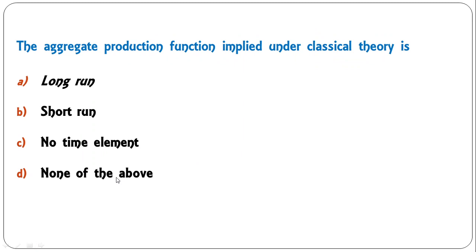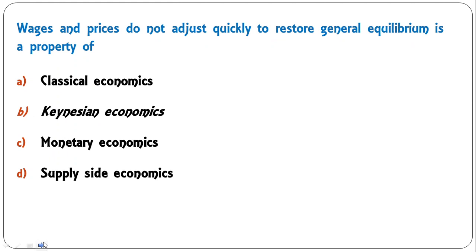Next question: the aggregate production function implied under classical theory is long run, short run, no time amount, or none of the above? The classical theory was propounded in the long run, unlike Keynesian theory. So A is the correct answer.